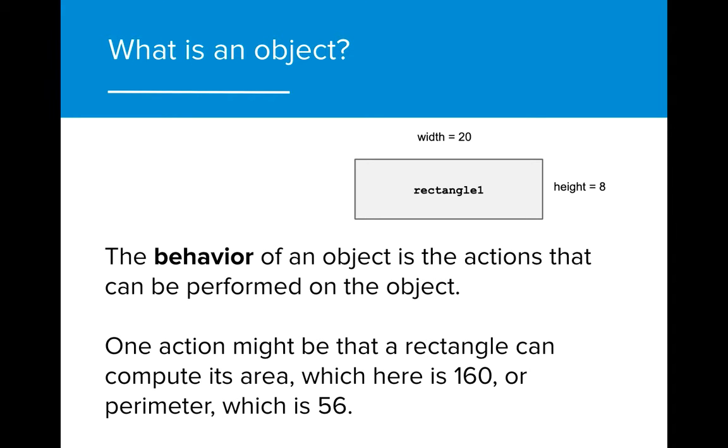The behavior of a given object is the actions that can be performed on the object. Often, the behaviors that can be performed on an object relate directly to the state of the object. In this case, actions such as determining the area or the perimeter of the rectangle rely on the existence of a width and a height.